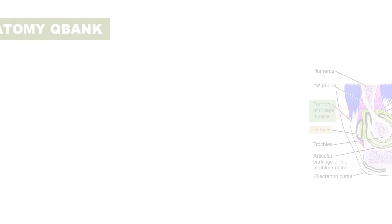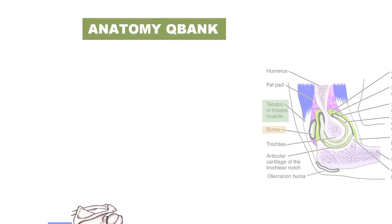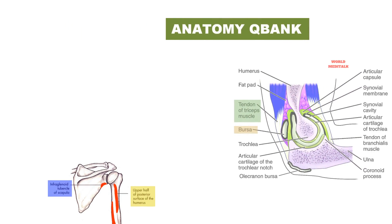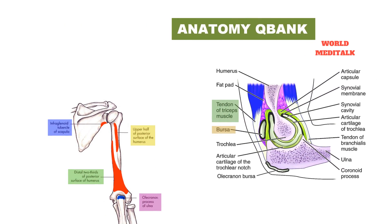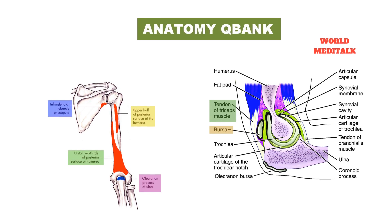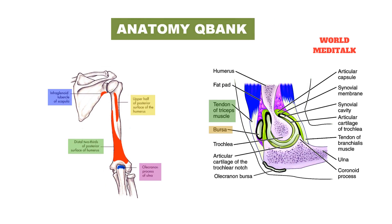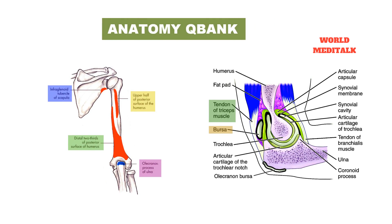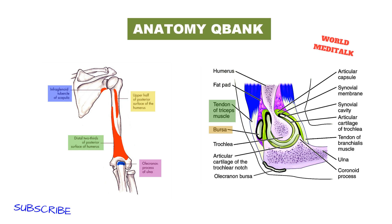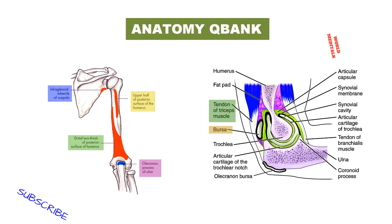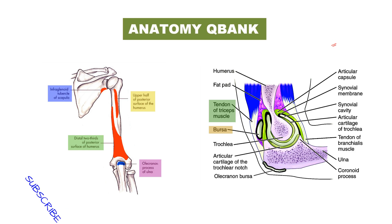The olecranon process is a large, thick, curved prominence situated at the posterior superior aspect of the ulna. It is bent forward at the summit so as to present a prominent lip that lodges into the olecranon fossa of the humerus when the forearm is extended. It has a subcutaneous triangular posterior surface which is smooth and covered by a bursa. Its quadrilateral superior surface has a rough impression for the insertion of the triceps brachii muscle posteriorly.